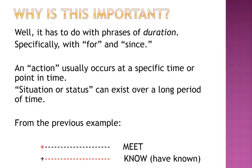Why is this important? It has to do with phrases of duration, specifically with 'for' and 'since.' An action usually occurs at a specific time or point in time. A situation or status can exist over a long period of time. Notice: the plus sign refers to an action — 'meet,' something that occurred only one time in the past. The dotted lines refer to status — for example, 'know' or 'have known,' something that occurs over a period of time.